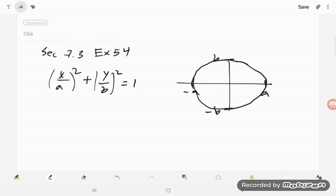They say show that the volume of the ellipsoid formed when this region is revolved about the y axis is 4 thirds pi a squared b. And they say, what's the volume when revolved around the x axis?